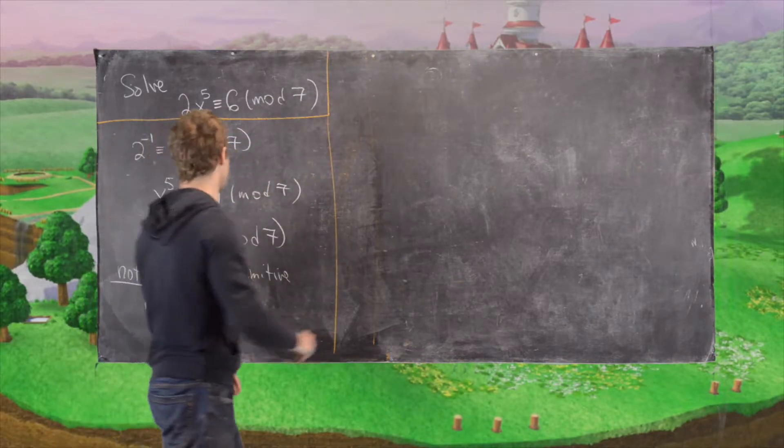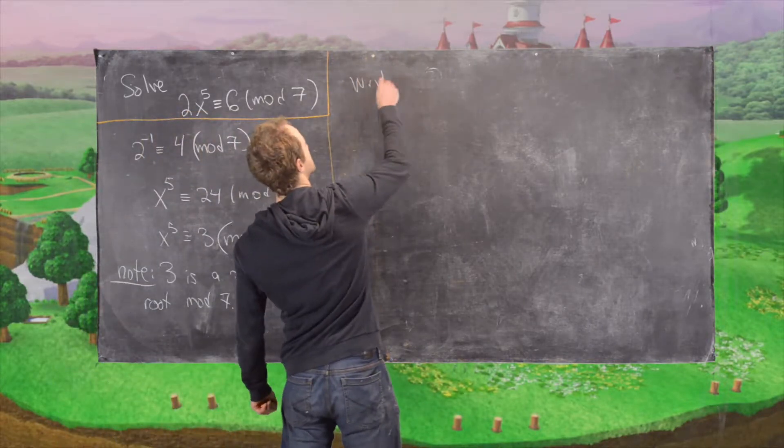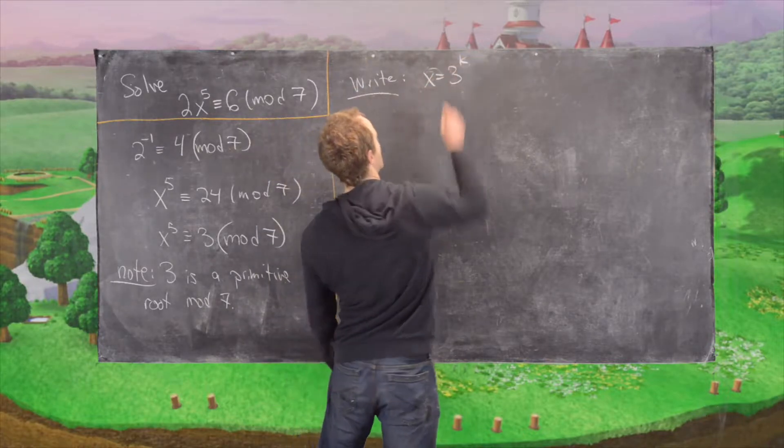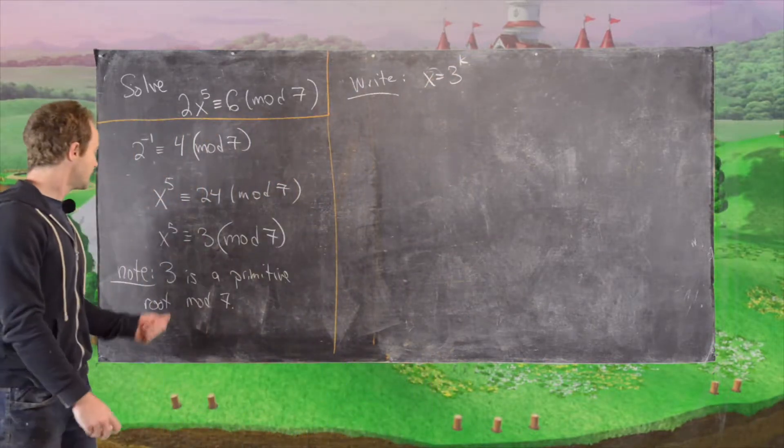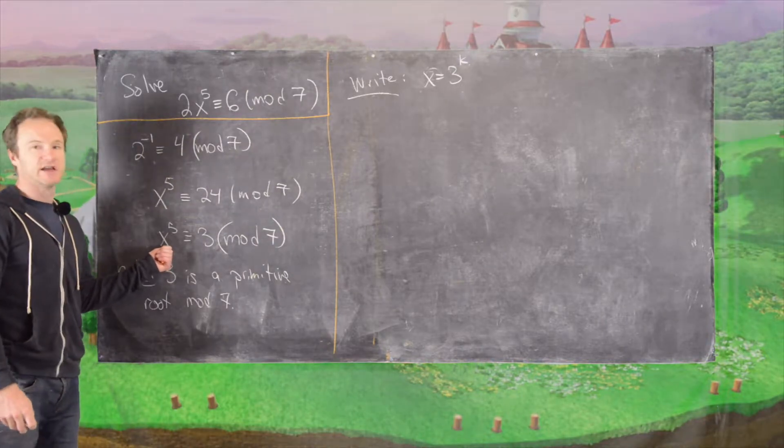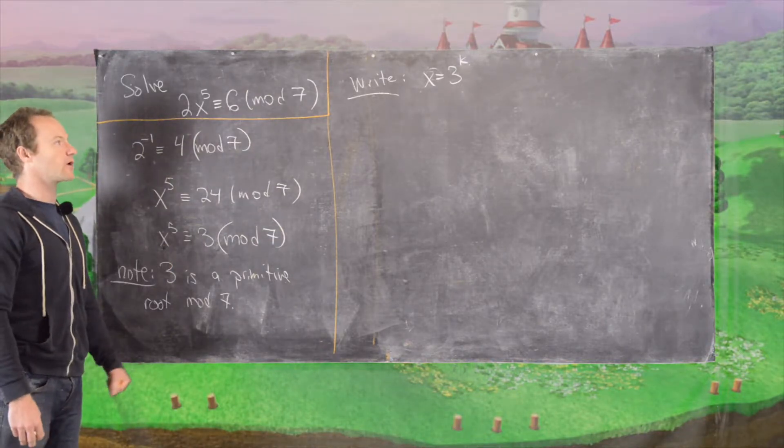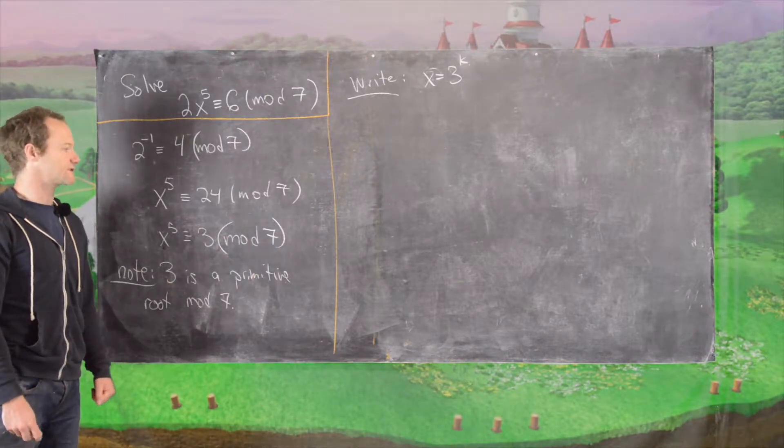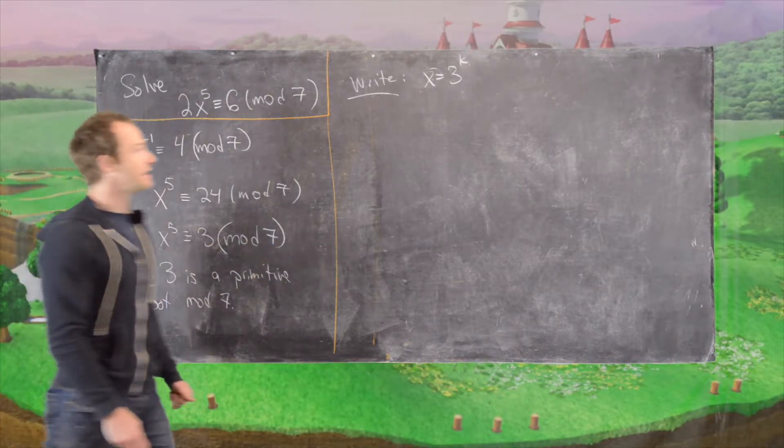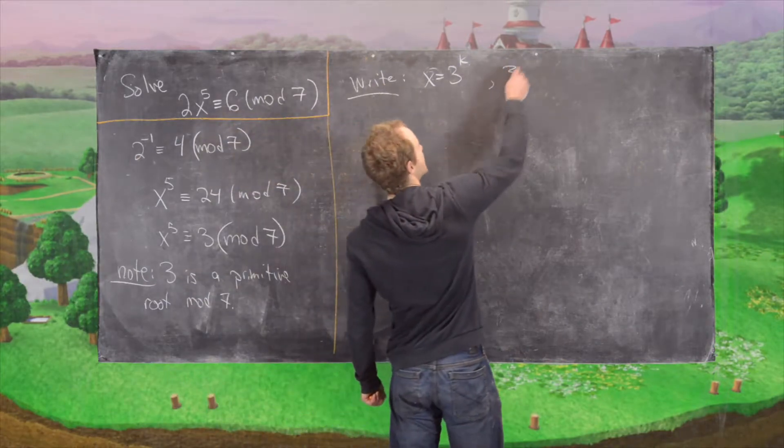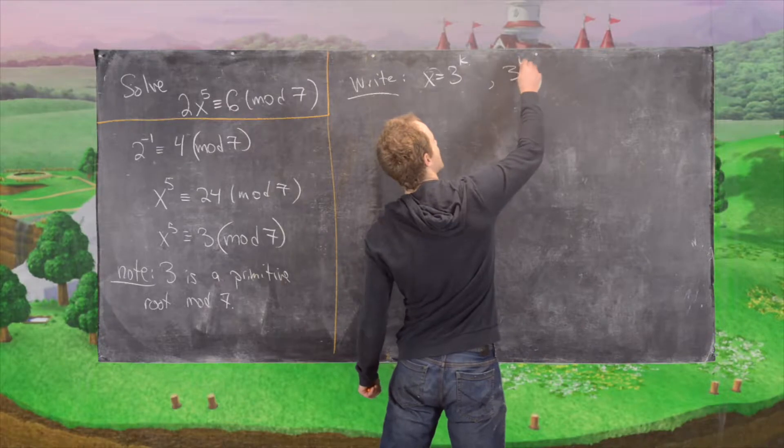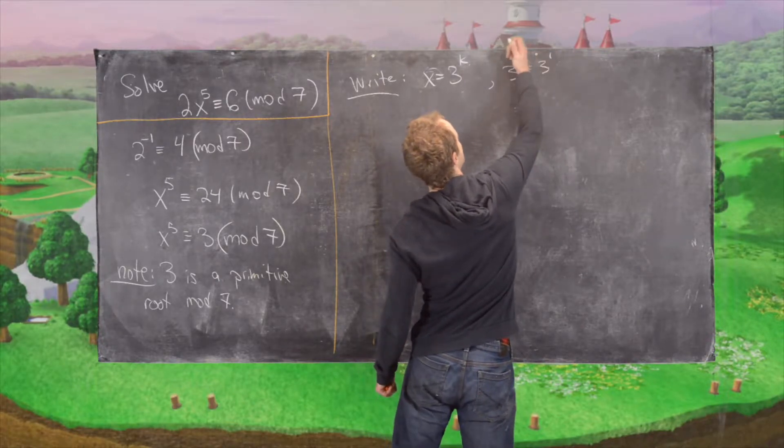So we'll write x equals 3 to the k. Because if we have a solution for x, then we know it must be of the form some power of this primitive root. So that's what we'll do. We'll say that it is 3 to the k. And then 3 is obviously equal to 3 to the 1. So let's write that like this. 3 is equal to 3 to the 1.